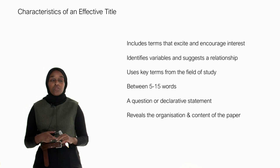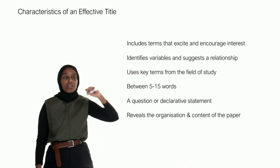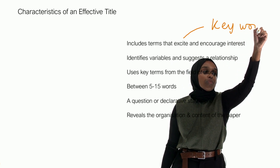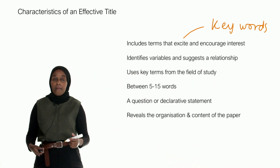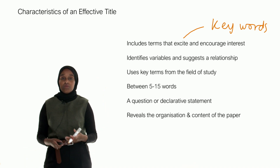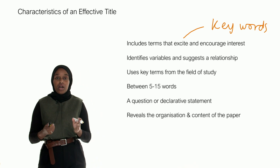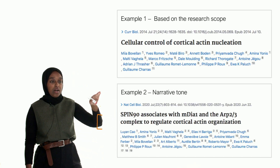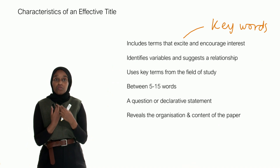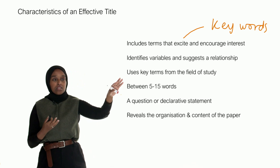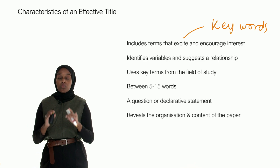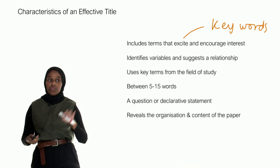Here are the characteristics of an effective title. First, it includes terms that excite and encourage interest — keywords that someone would search for from your field. It identifies the variables and suggests a relationship. In that previous narrative title, you had the protein Spin-90, two other proteins, and the word 'associates' — suggesting a relationship between those proteins. It also uses key terms in the field of study. If you're stuck, think about what terms you would search for during the literature review.